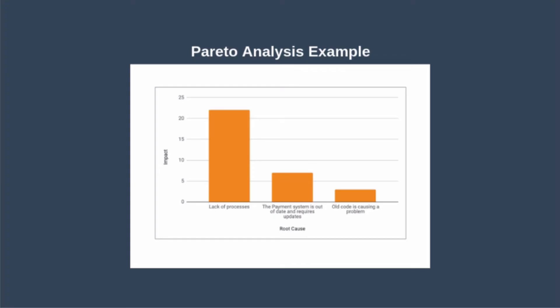Keep in mind that Pareto is a principle, not a strict rule — it doesn't always have to be exactly 80/20. You might find 90% of the impact is caused by 10% of the causes, or that 60% is caused by 40%. In this example, the obvious first step is to invest in more robust processes and possibly employee training to ensure everyone follows those processes. By addressing this root cause first, you will be addressing 55% of your negative impact in a single step.